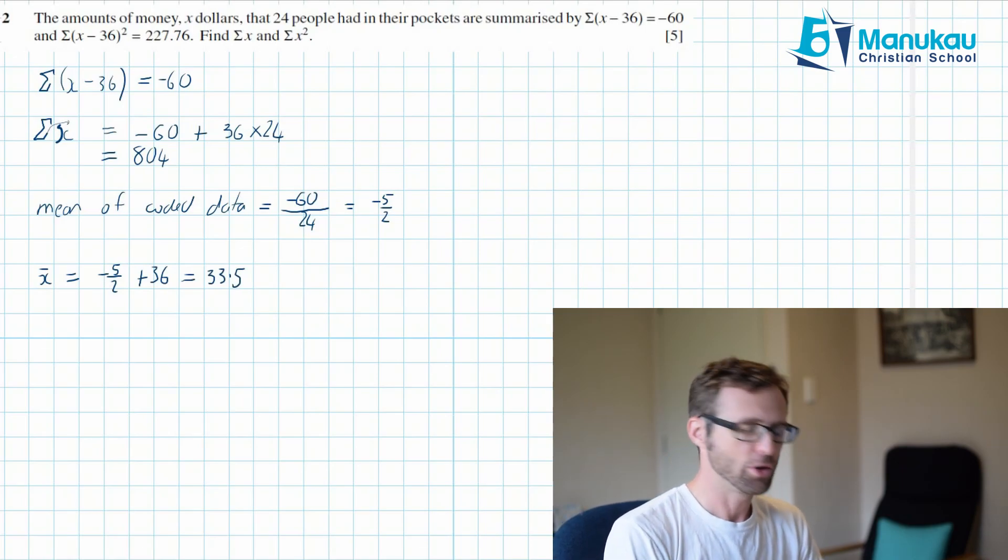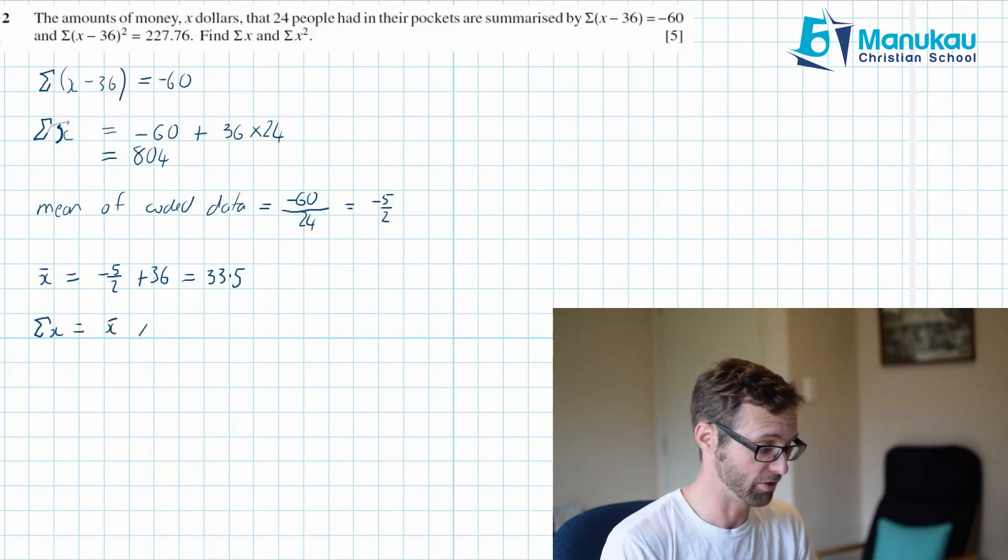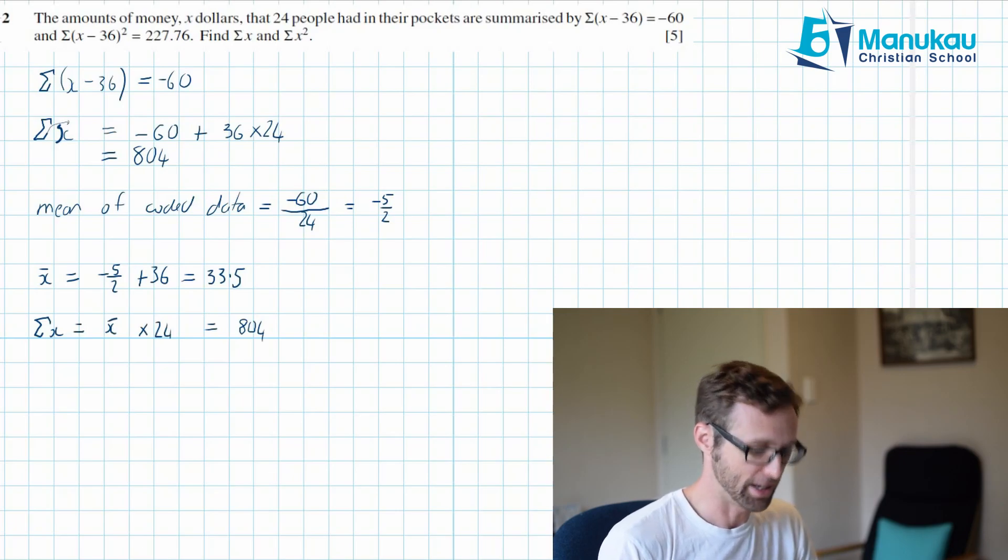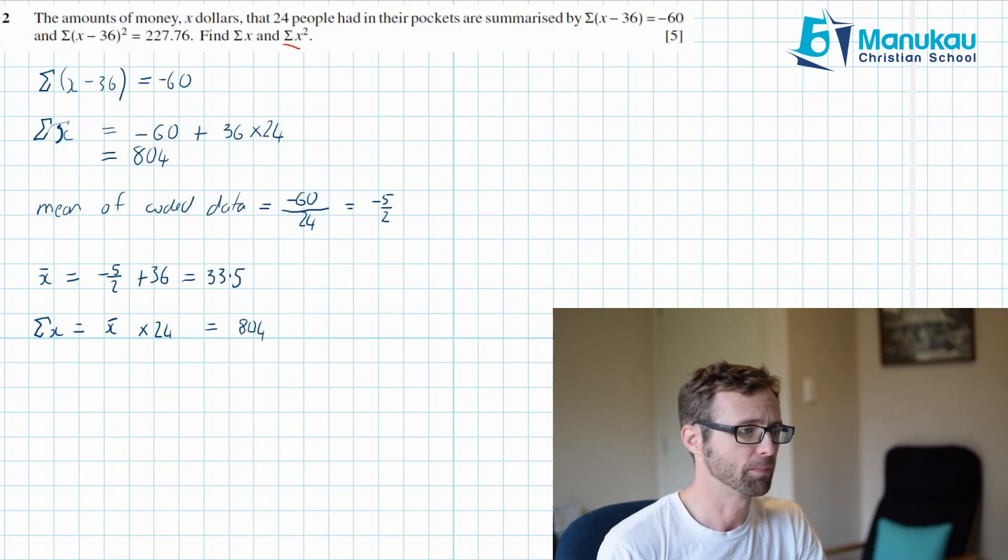At this point you know how means and totals work. If you want to find the sum of X you just need to find the mean and then you need to multiply it by the number of items of data that you have which is 24. So when we do this we should get 804, and we do. That is 804. So I hope you understand both of those ways that I've used to find the sum of X.